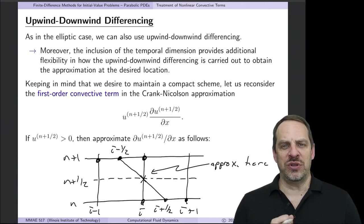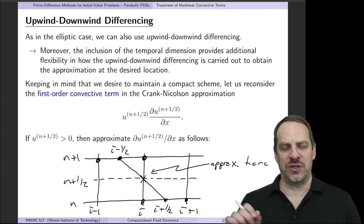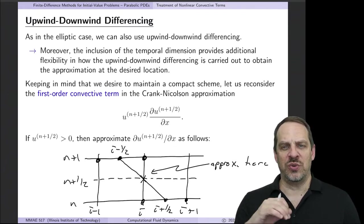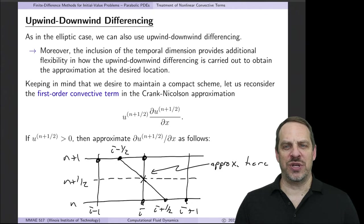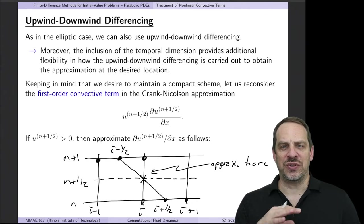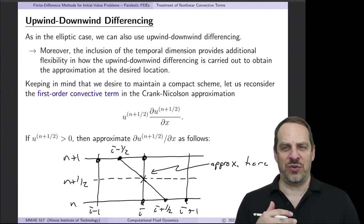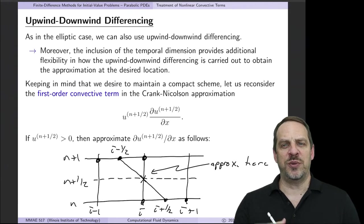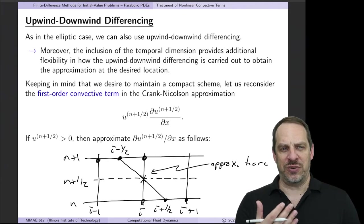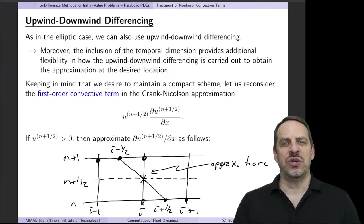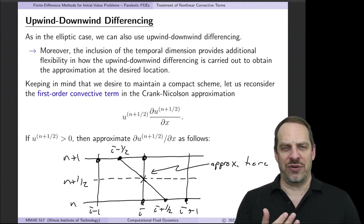Here we're going to look at the upwind differencing that we first introduced in the context of elliptic partial differential equations. We're going to apply it in the context of parabolic equations, and we'll see how we can take advantage of the fact that we have both space and time in order to upgrade the upwind differencing to second-order accurate.